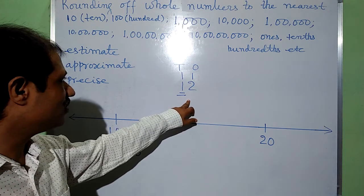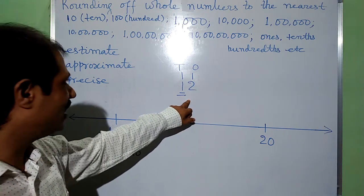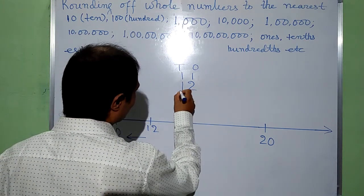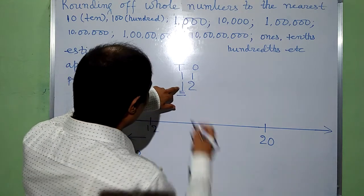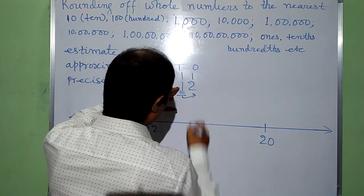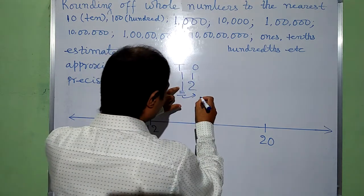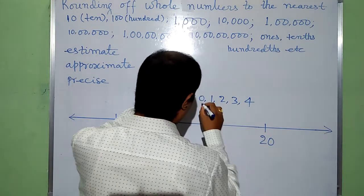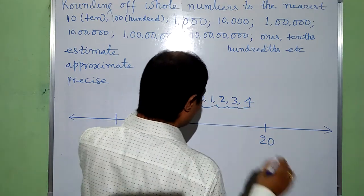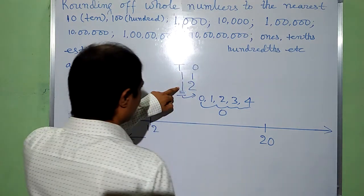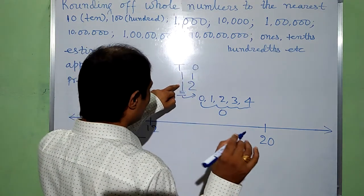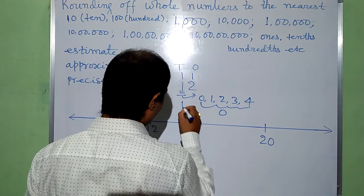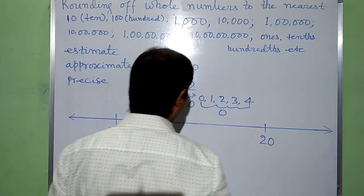We have to change 12 to the nearest multiple of 10. We have to consider the target digit at the 10's place, that is 1. Now, just to the right side of this 1, there is 2. If the digit to the right is 0, 1, 2, 3, or 4, then it will be reduced to 0, and the target digit will remain as it is. So it will be 1, 0 — that is 10.